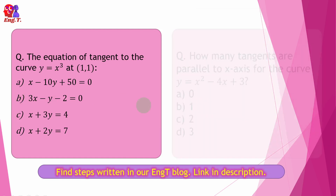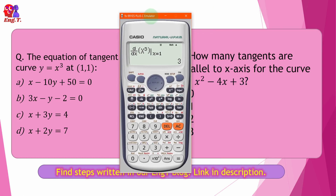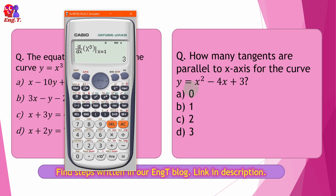The next question is: how many tangents are parallel to the x-axis for the curve? For a tangent to be parallel to the x-axis, the slope must equal zero.